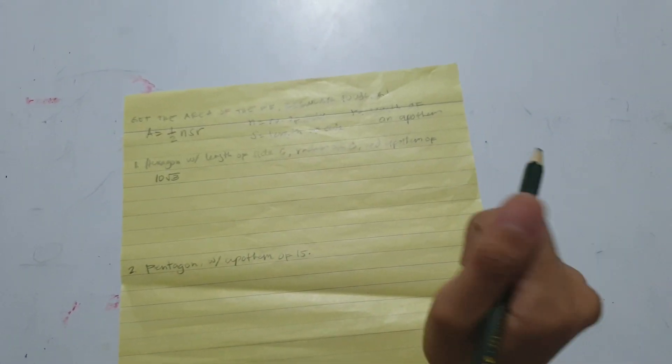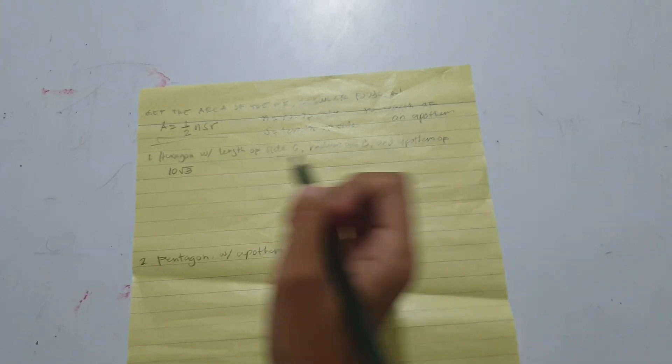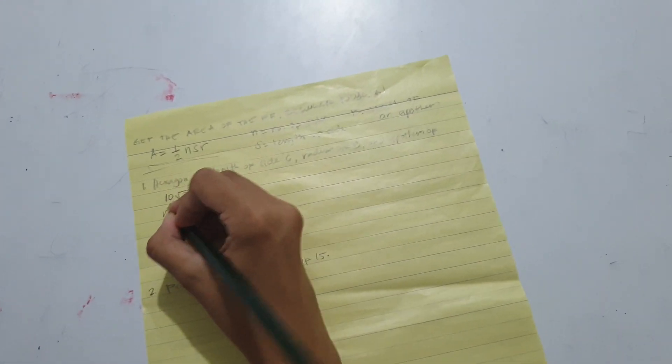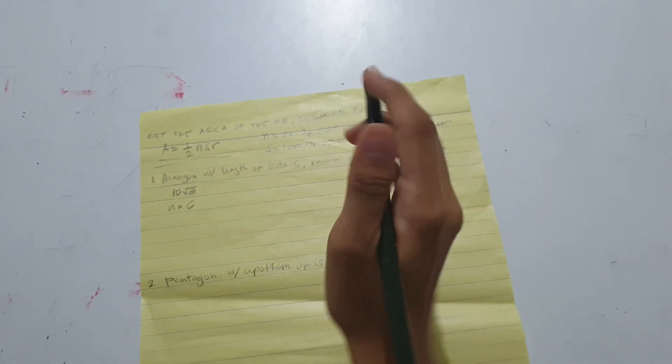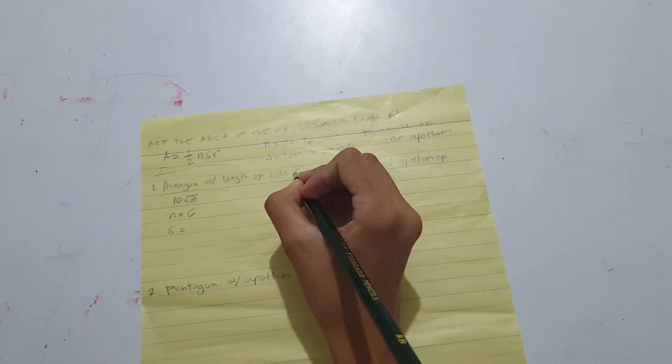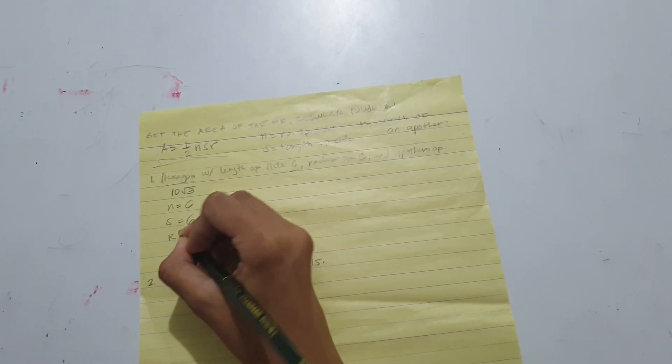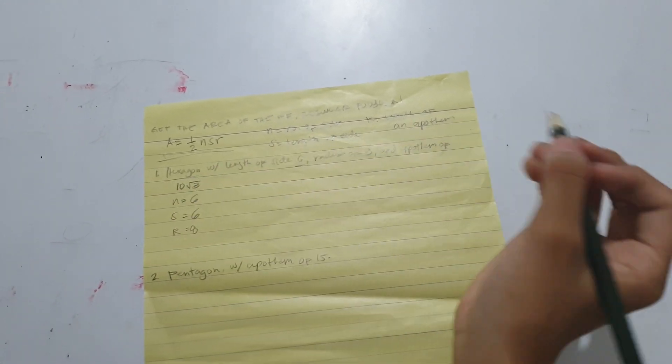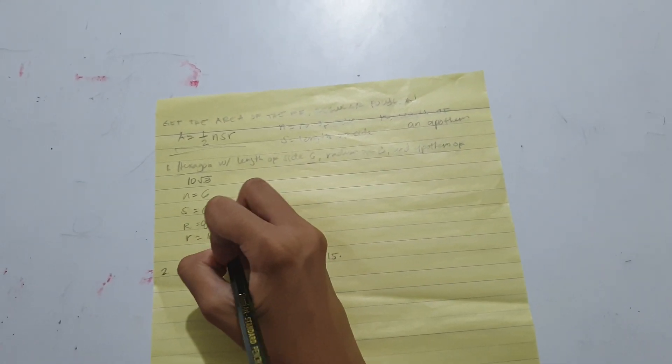First thing you need to do is distinguish all the variables so you can easily substitute them into our formula. N would be six since a hexagon has six sides. S is six, radius is eight, and apothem is ten square root of three.